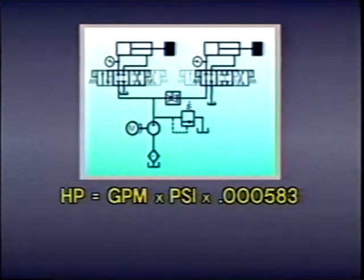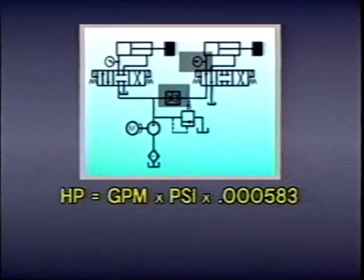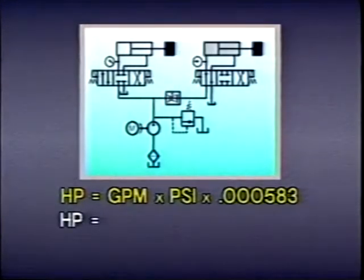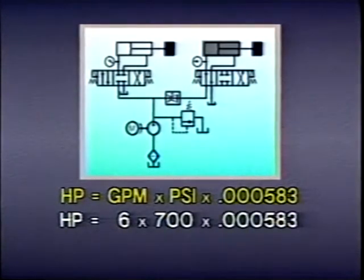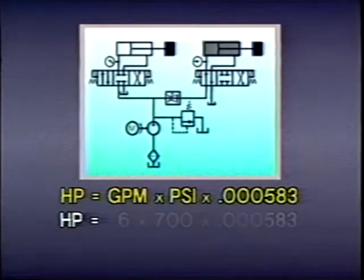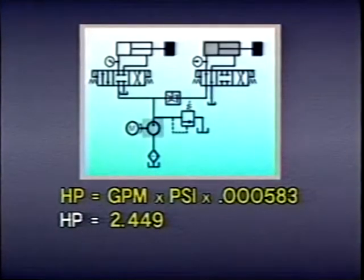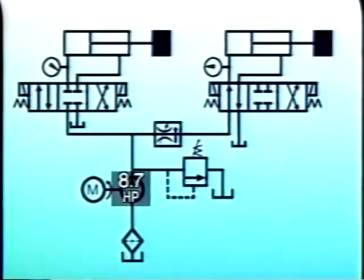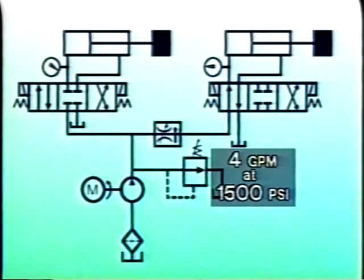However, when we shift the pump flow to cylinder B, the system becomes quite a bit less efficient. The pressure compensated flow control valve lets only 6 GPM pass at 700 PSI. This means cylinder B is using only 6 times 700 times 0.000583 or about 2.4 horsepower, while the pump is producing about 8.7 horsepower to push the remaining 4 GPM past the relief valve at 1500 PSI. This excess horsepower is turned into heat in the system.